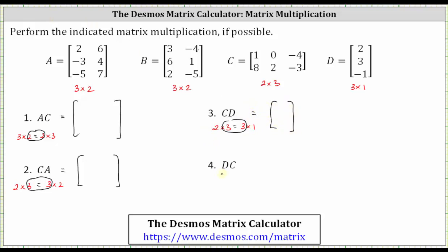And then finally, we have matrix D times matrix C. Matrix D is a three by one matrix and matrix C is a two by three matrix. Notice for this product, one does not equal two, and therefore D times C is undefined.